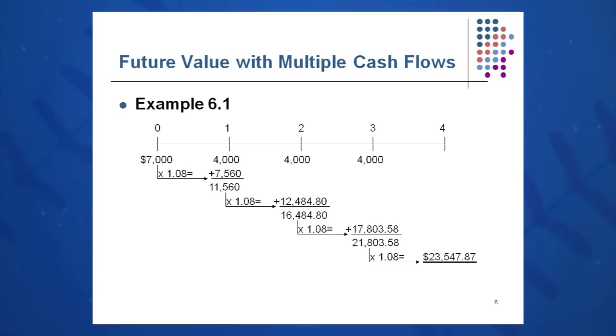So I draw a timeline. I'm going to encourage you for all future sessions, we want to draw timelines when we have multiple cash flows. A lot of you are graphic learners and drawing a timeline will help. So I have 7,000 today. So I put the 7,000 at time zero, 4,000 deposited at the end of year one, 4,000 at the end of year two, and 4,000 at the end of year three. We assume that these amounts get deposited at the end of each year, December 31st.